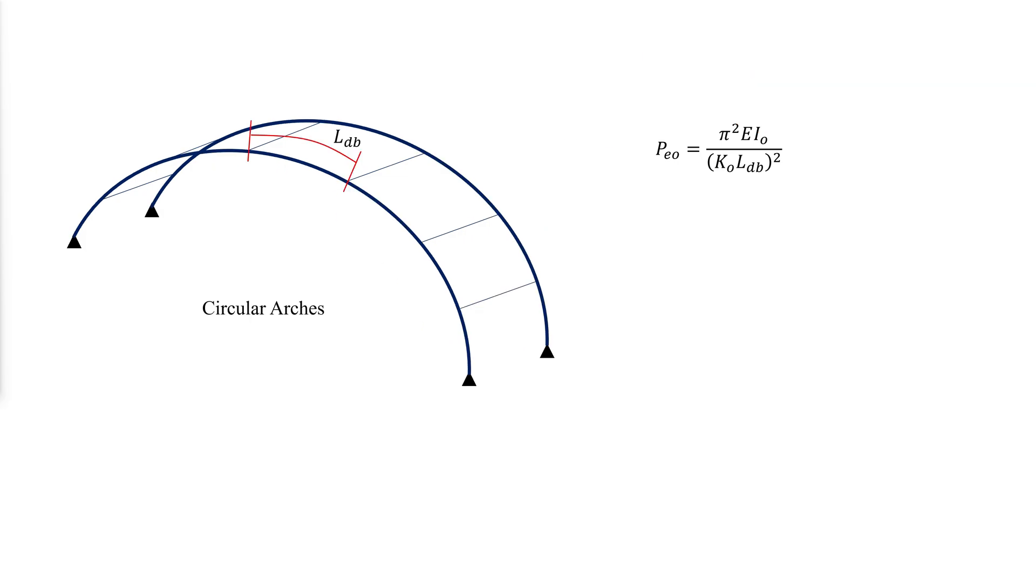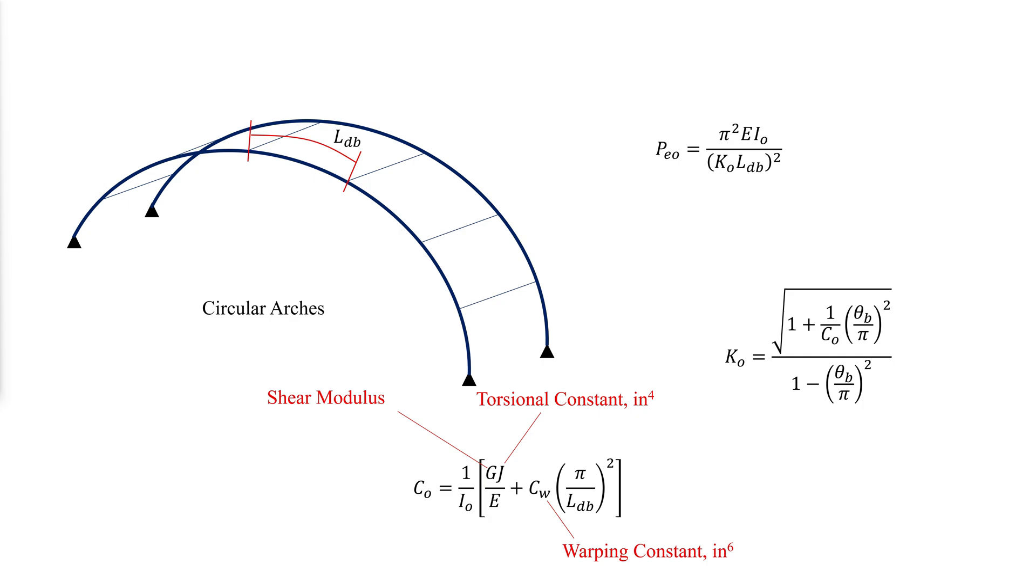For circular arcs formed of doubly symmetric shapes, the effective length factor is found as follows, where C_O can be found with the following equation. G is the shear modulus, J is the torsional constant, CW is the warping constant, and theta_B is the subtended angle between braces in radians.